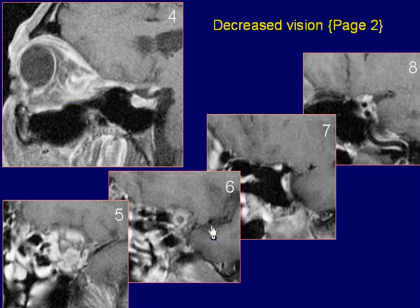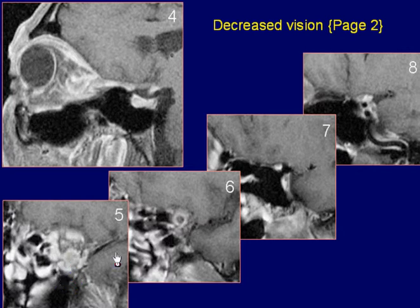Oblique coronal post-contrast fat saturation images from the orbit to the optic chiasm demonstrate again peripheral enhancement of the left optic nerve lesion with posterior extension through the optic foramen to the chiasm.